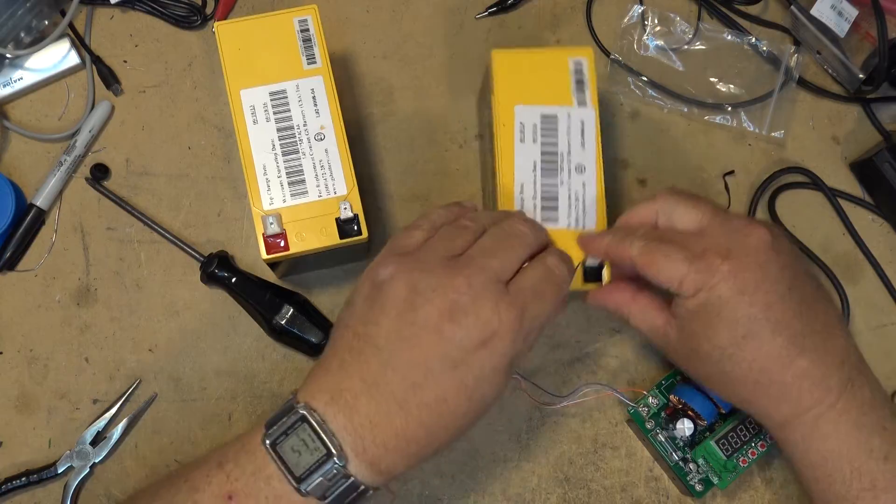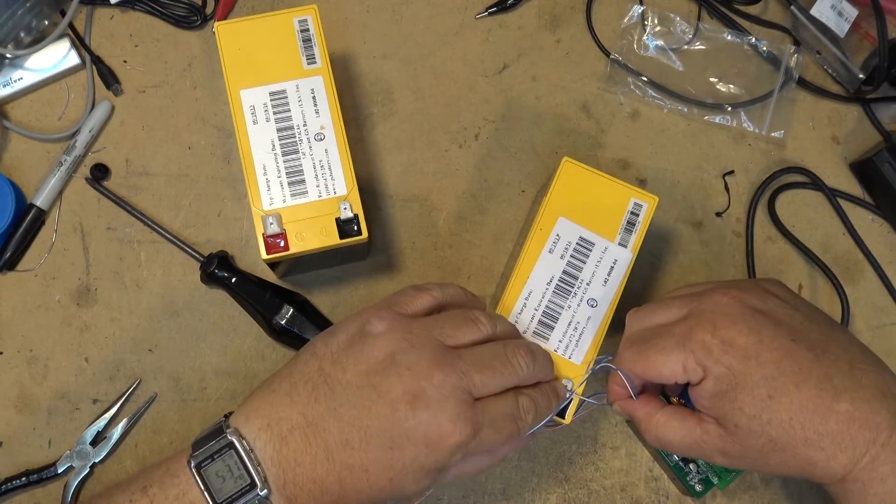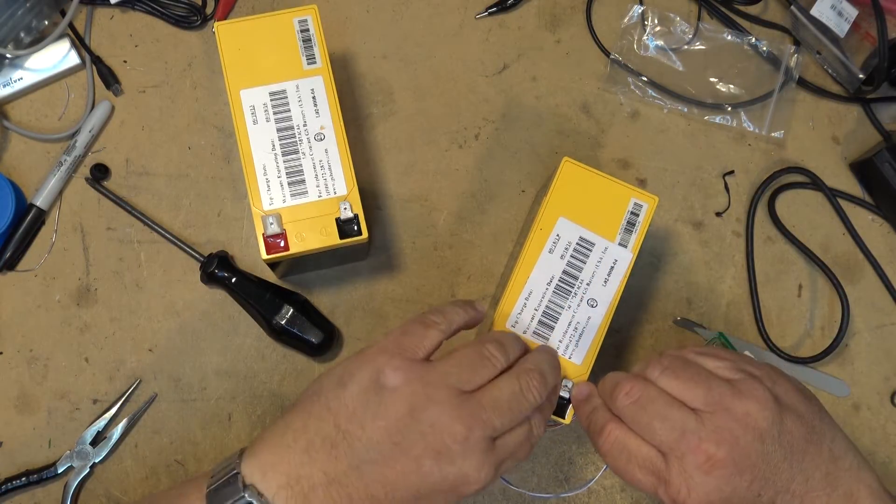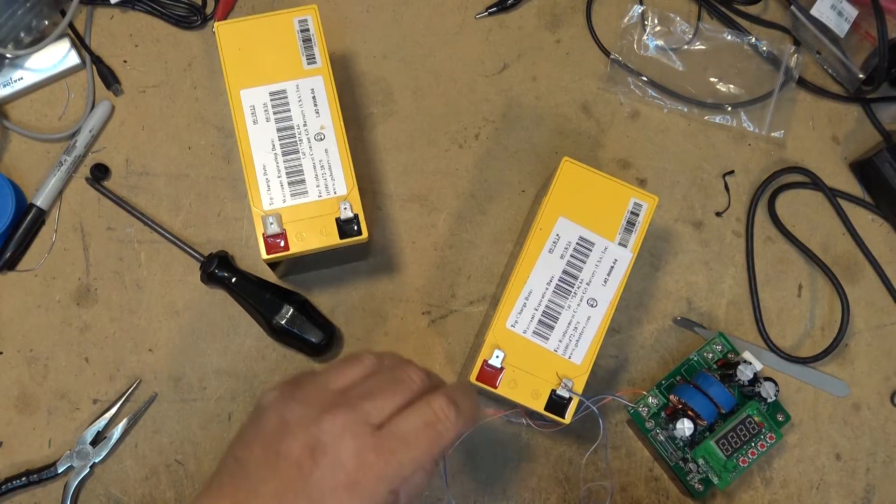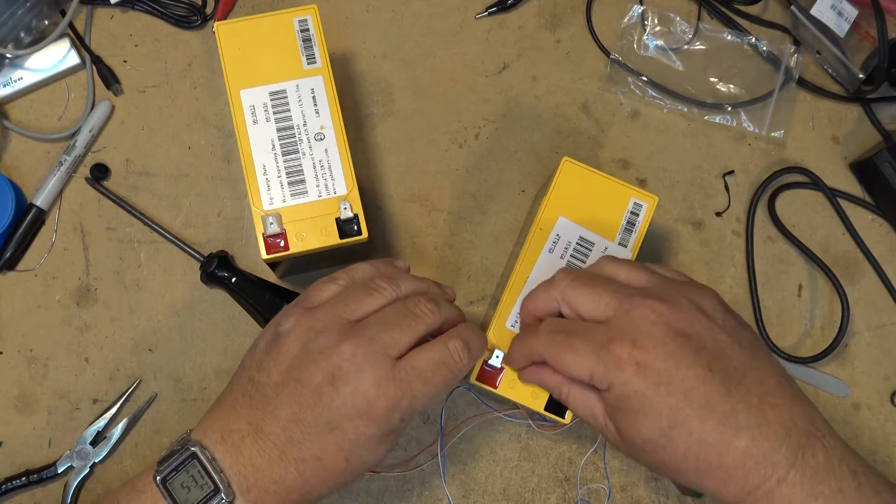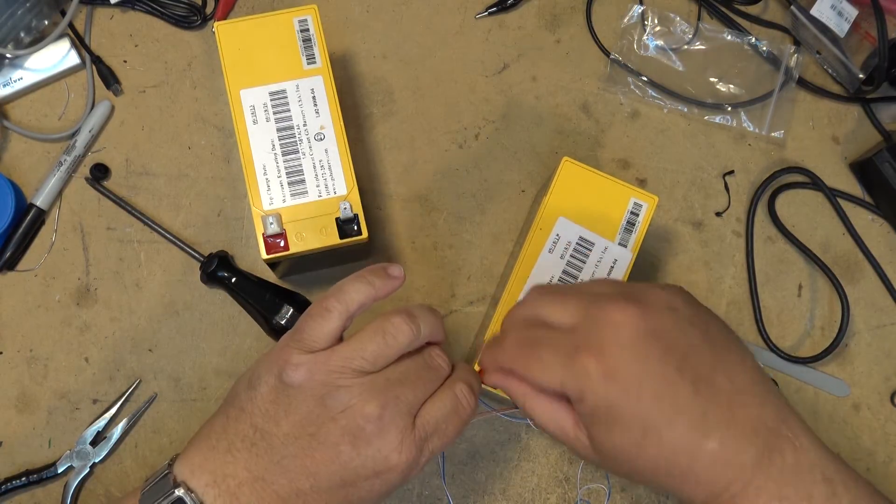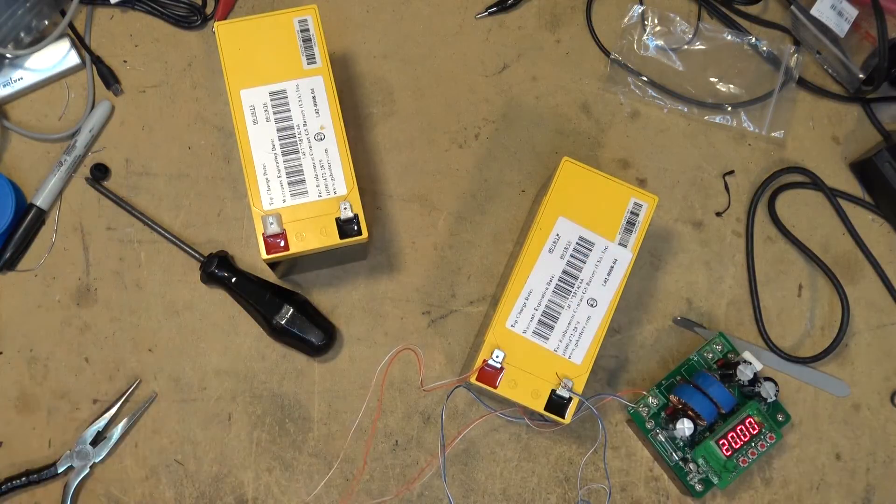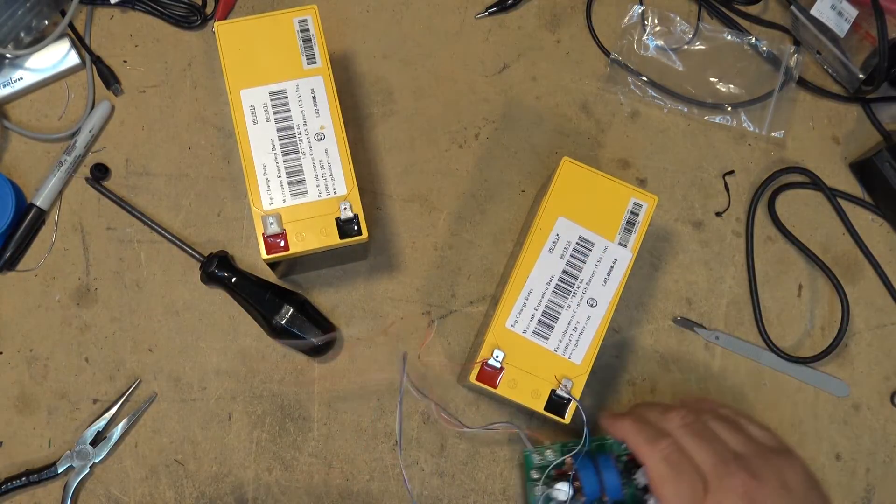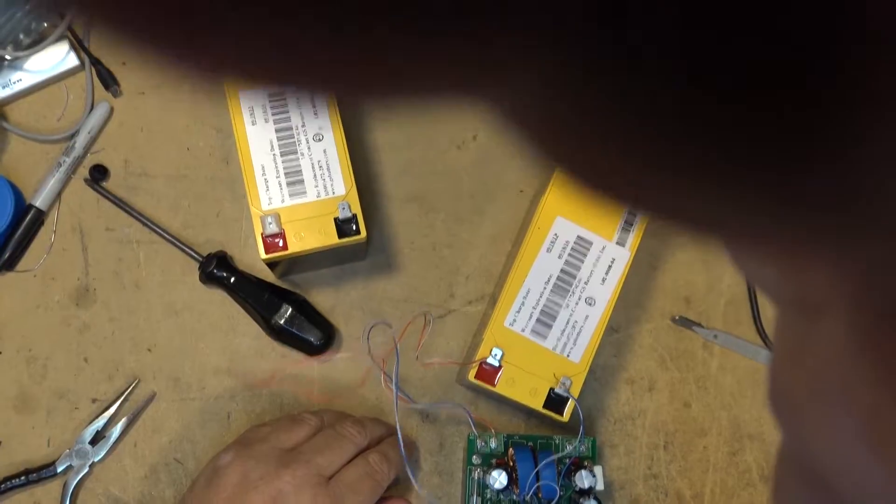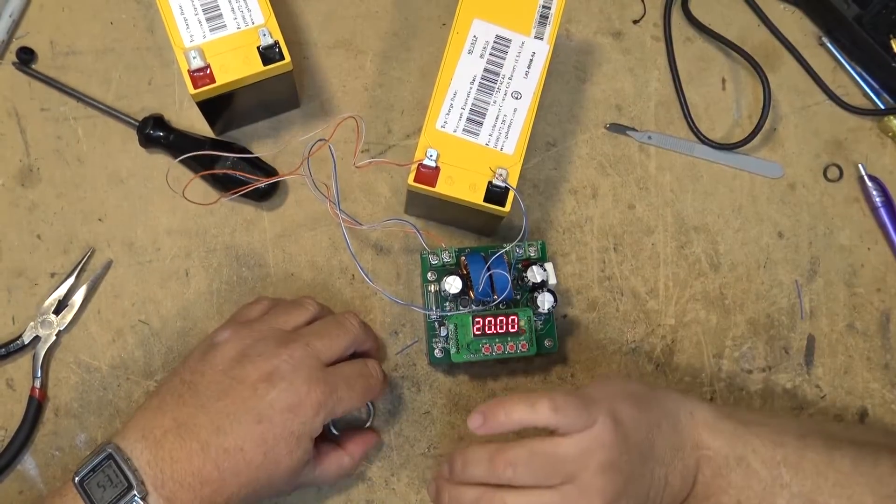We're going to connect it up to our 12 volt battery now. I know I'm using thin wires here but they will do the job. Using blue wire for negative and orange wire for positive. The display is now showing 20, which I imagine means 20 volts.